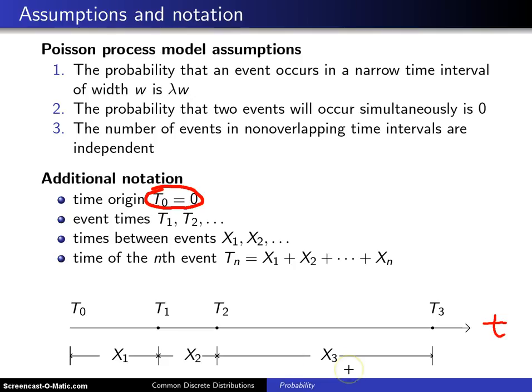These are the assumptions and the notation that we'll carry forward as we start to put together the formal definitions for a Poisson process.